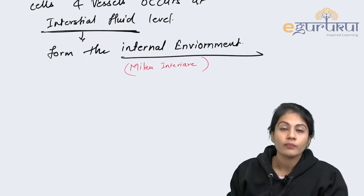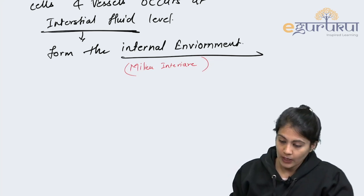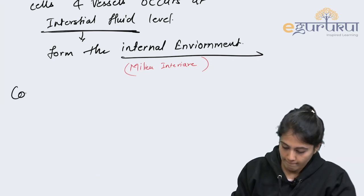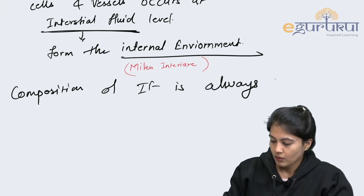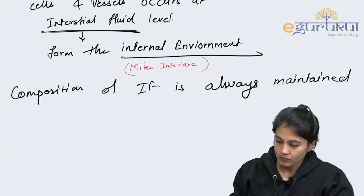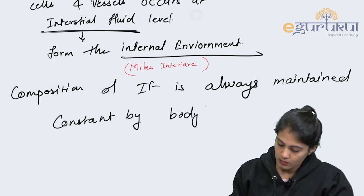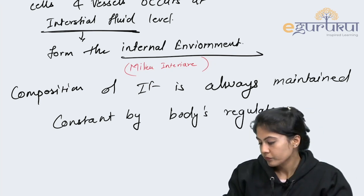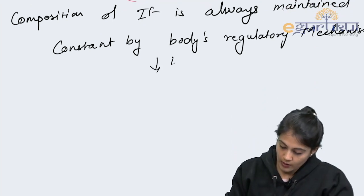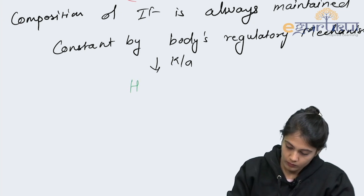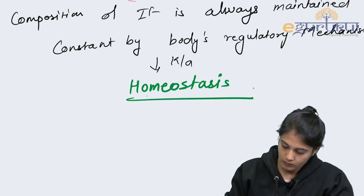The composition of interstitial fluid always needs to be maintained because it is maintaining the internal environment, so it should be maintained very well. The composition of interstitial fluid is always maintained constant by body regulatory mechanisms, and that is known as homeostasis — the basic principle of physiology.